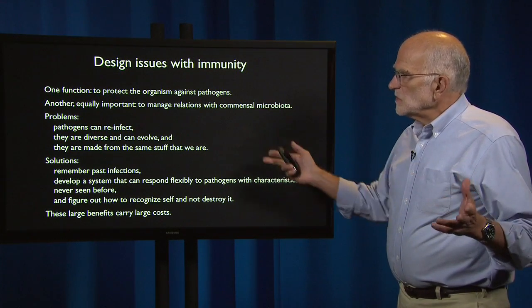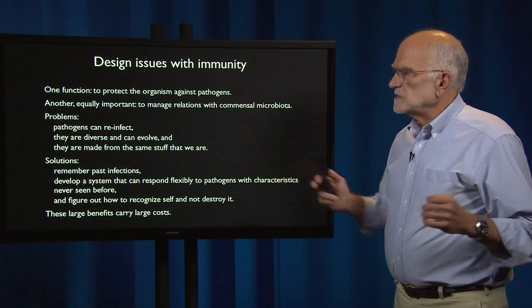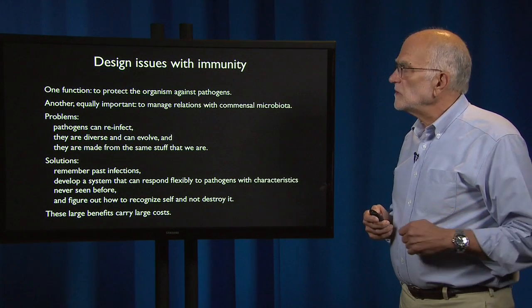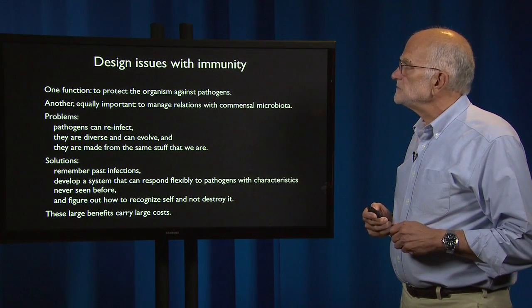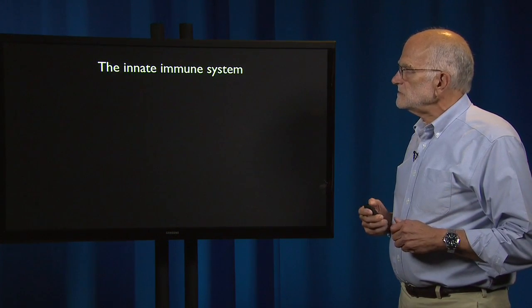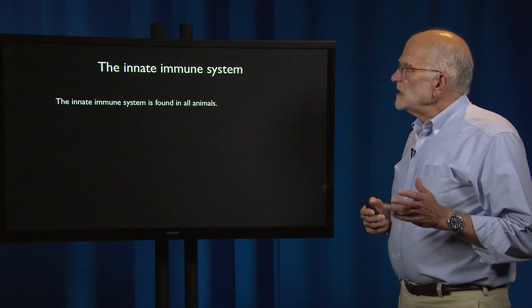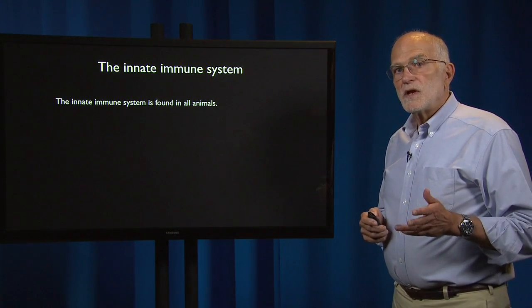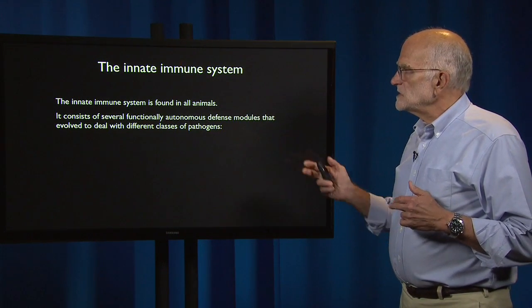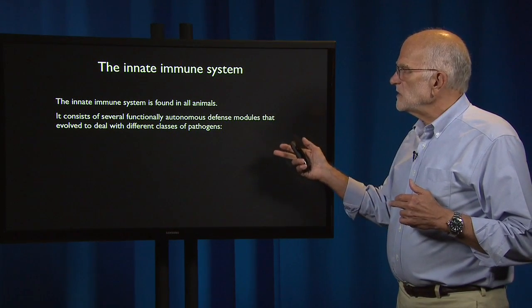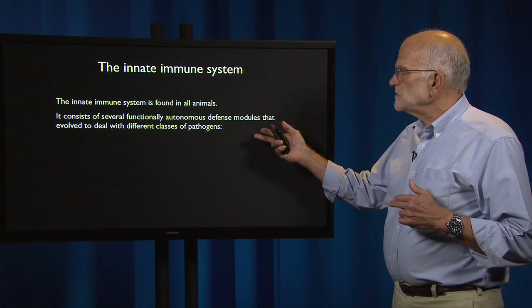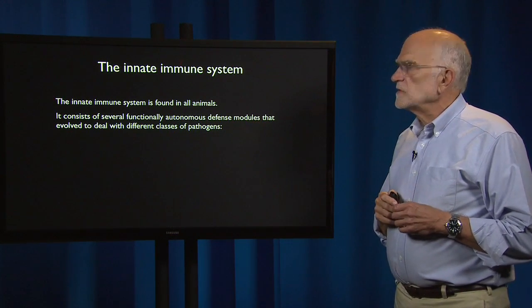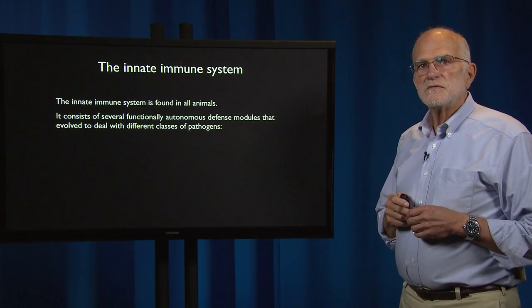So these are large benefits, but of course they can bring with them large costs. The innate immune system is one that's found in all animals. It has several functionally autonomous defense modules, which evolved to deal with different classes of pathogens.